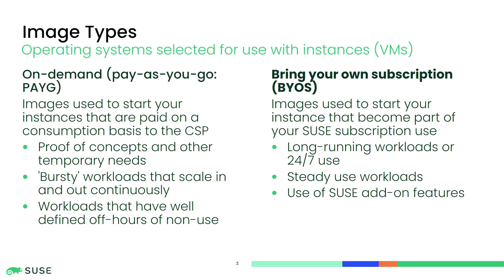Pay-as-you-go runs by the hour. It's good for bursty workloads or workloads that have a well-defined use case if you turn them off overnight. If you run a workload 24/7, pay-as-you-go will be more expensive than if you go with a bring-your-own subscription model. Pay-as-you-go gets supported by the cloud service provider for level one and level two, and then SUSE provides level three support to the cloud service provider. If you're using pay-as-you-go, you would call Amazon support, they will help you, and if they determine it's something only SUSE can fix, then they call us.